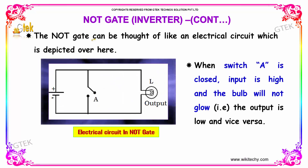The NOT-GATE can be thought of like a theoretical circuit, which is depicted here. When switch A is closed, the input is high and the bulb will not glow. The output is low and Y is zero.